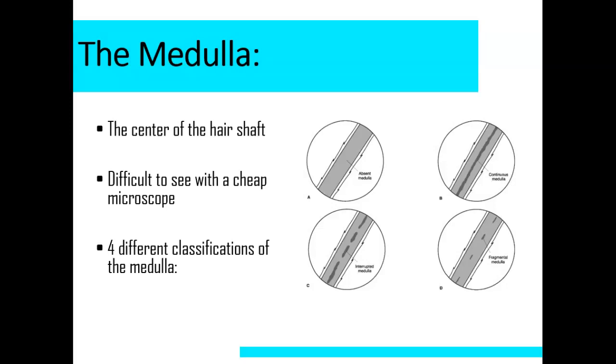The medulla, the center of the hair shaft. Difficult to see with a cheap microscope, so we probably won't see them very well. You might be able to see a little bit, but there are four different classifications of the medulla: the absent medulla, continuous medulla, interrupted medulla, and fragmented medulla. We're going to go over these in a little bit more detail in the next video. And when I return, we are going to do a lab. We're going to look at all these and see what we can see under our microscopes at school.